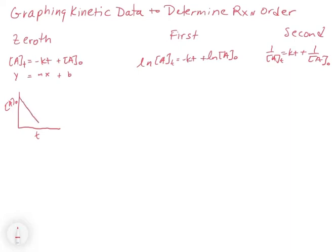We would have a y-intercept equal to A₀, and a line going down with a slope equal to minus k. The slope is minus k because that entire term is equivalent to the slope, so we include both the minus and the k. To get k, we take the negative of the slope. So for zeroth order, we get a straight line directly from concentration of A versus t, with y-intercept equal to A₀ and slope equal to minus k.